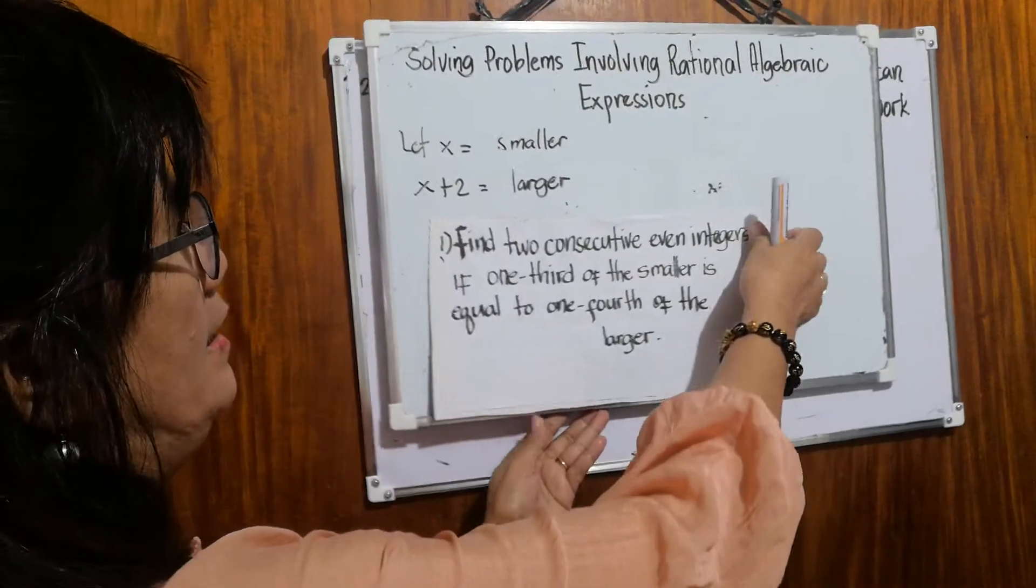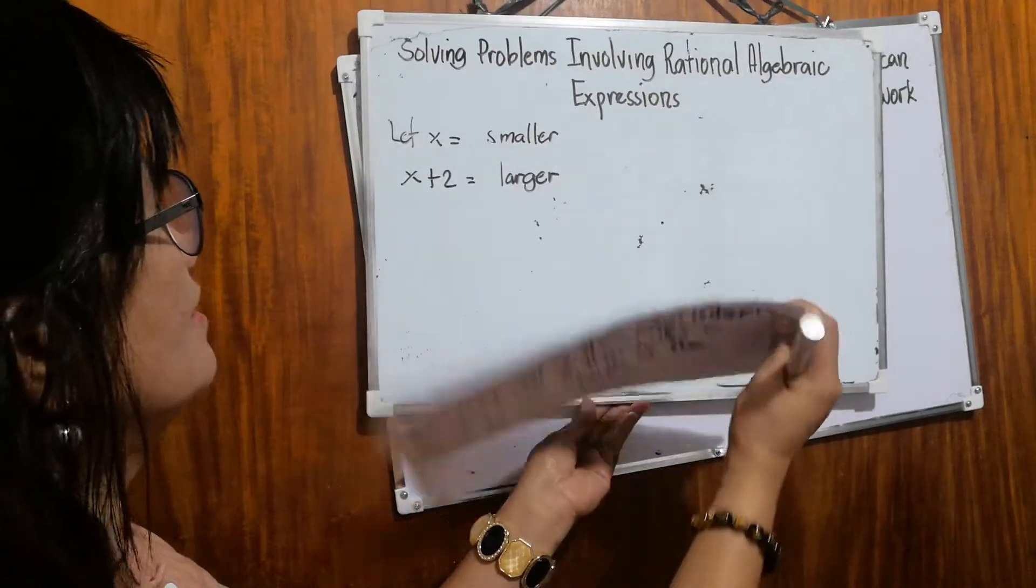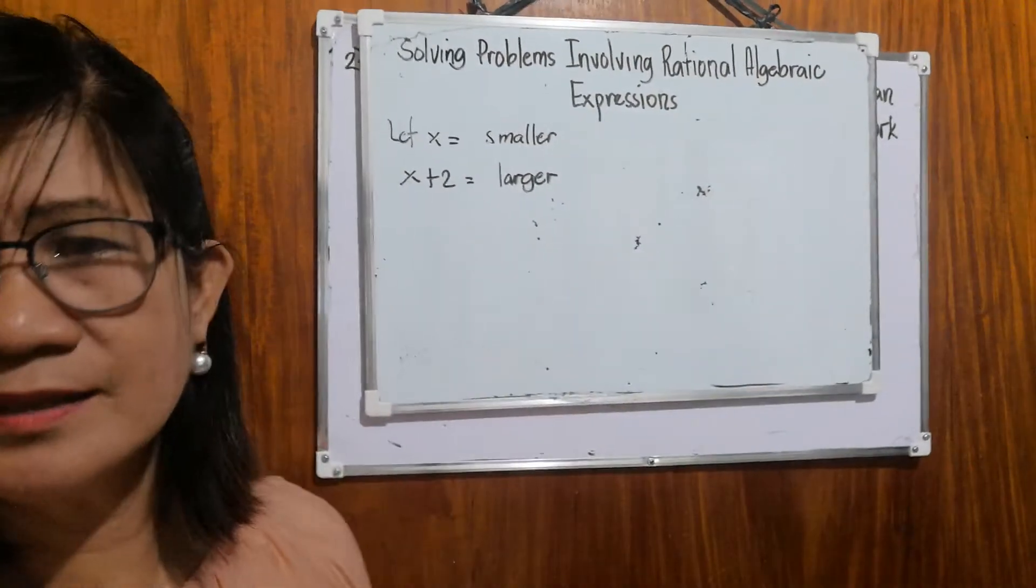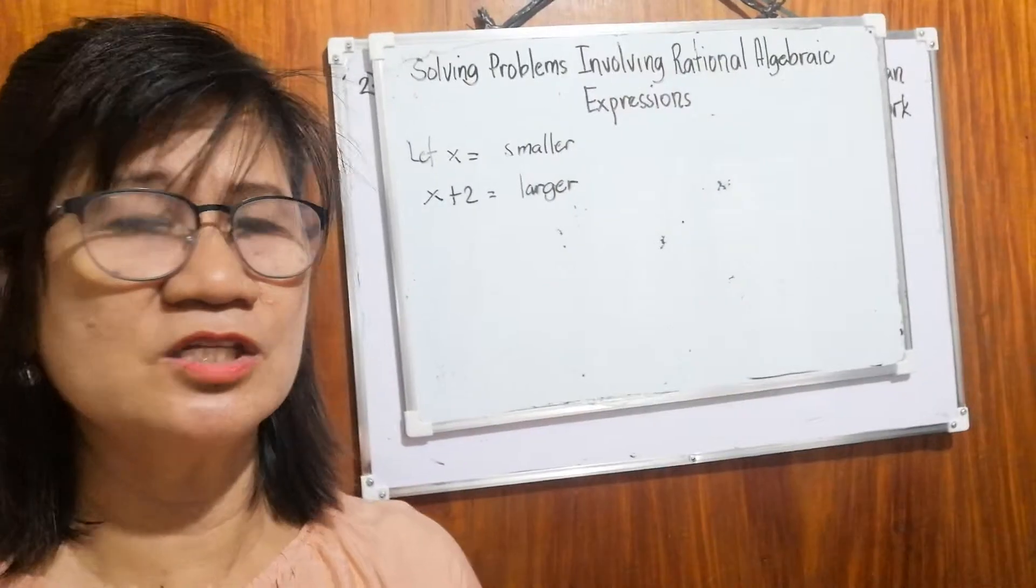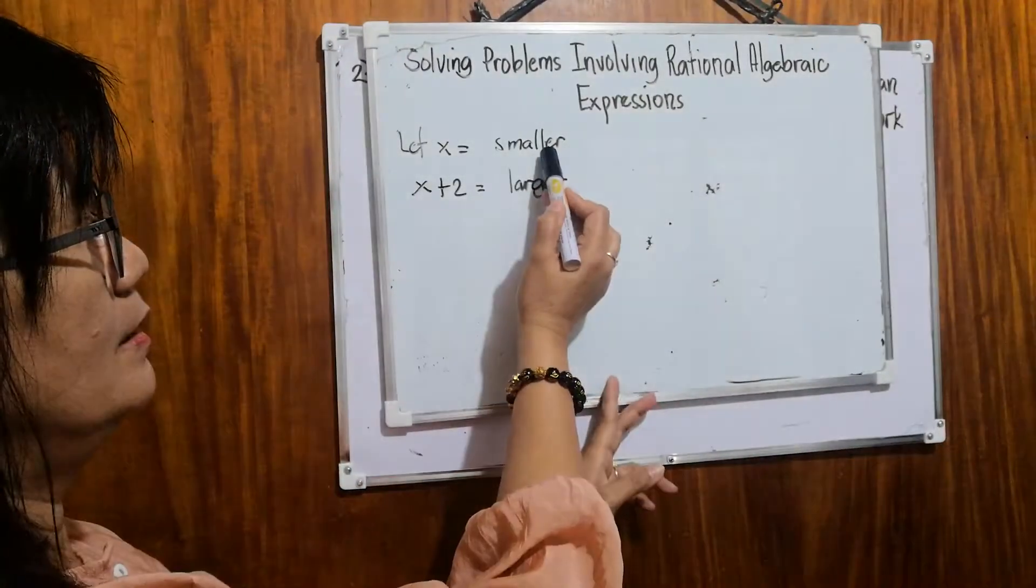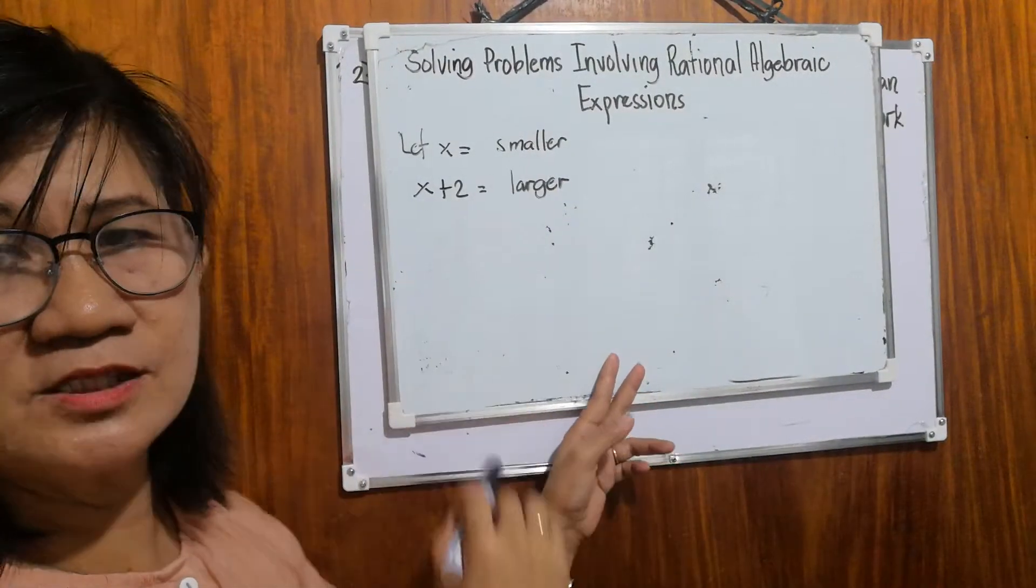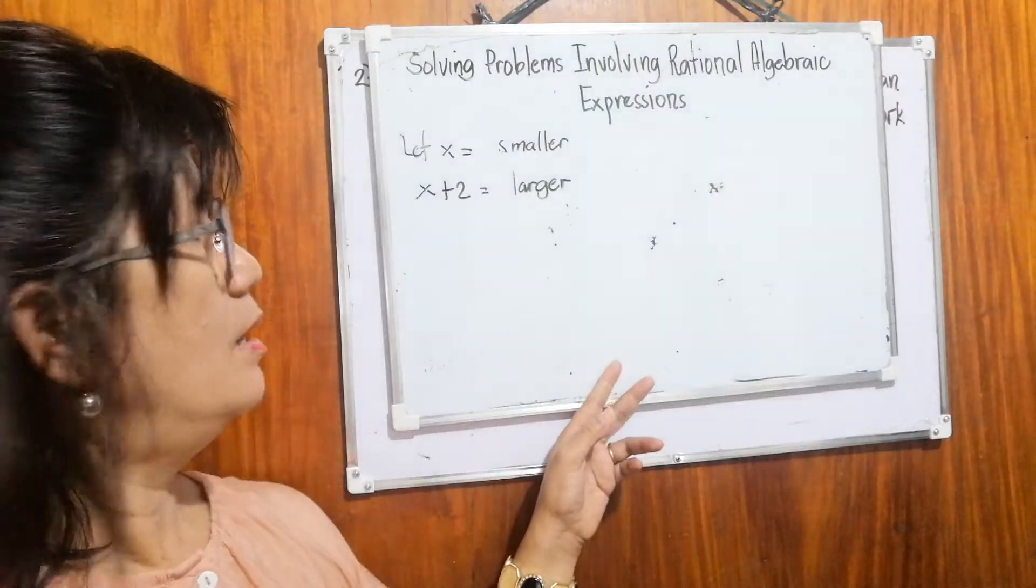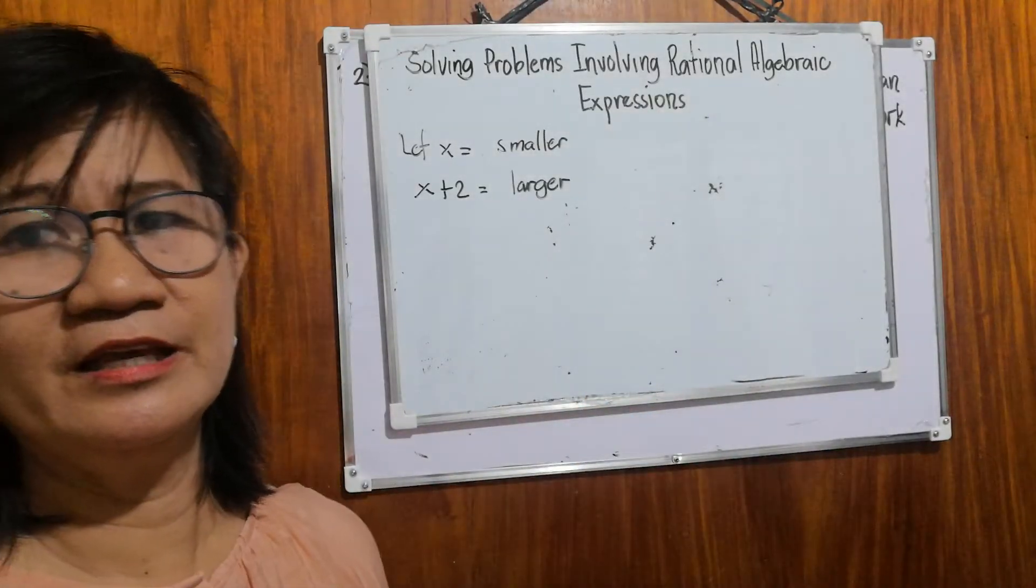So now let x represent the smaller even integer, and let x plus two be our larger even integer.